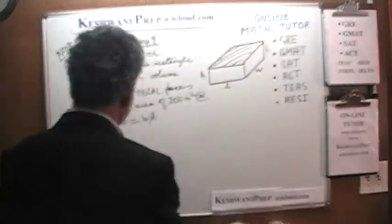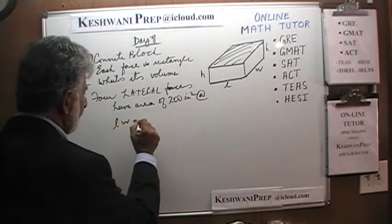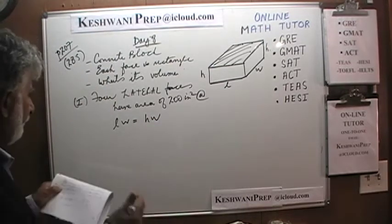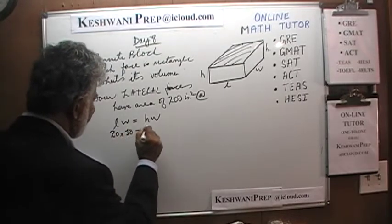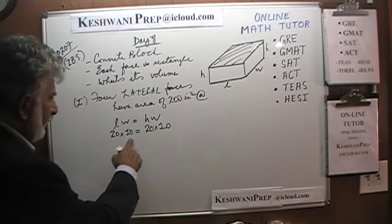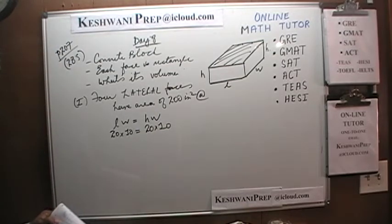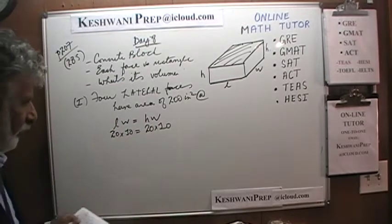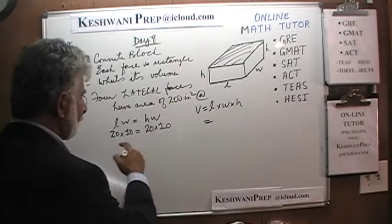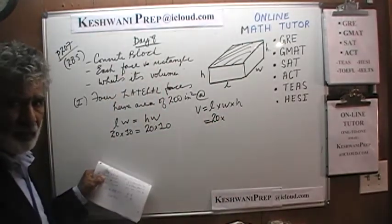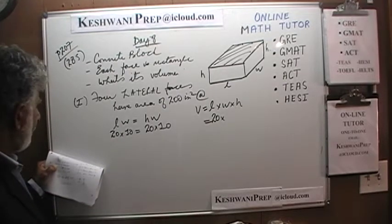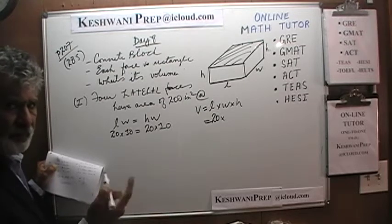For example, we could plug in 20 times 10 equals 20 times 10, giving length 20, width 10, height 20. But it could also be 200 times 1 — length 200, width 1, height 200 — giving a completely different volume. Or it could be 50 times 4. The volume keeps changing, so the first statement by itself is not enough. The answer cannot be A or D.